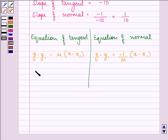The points which are given to us is (0, 5). So we have y minus 5 equal to m that is minus 10 slope of the tangent times (x minus 0). Here we have y minus 5 equal to the slope of the normal that is 1 upon 10 times (x minus 0).